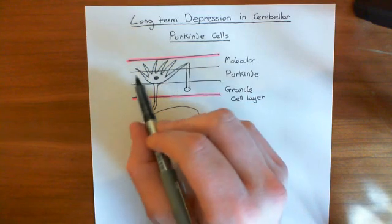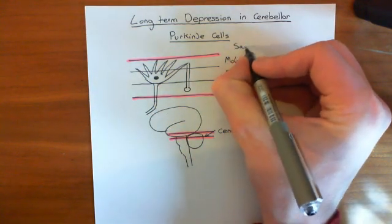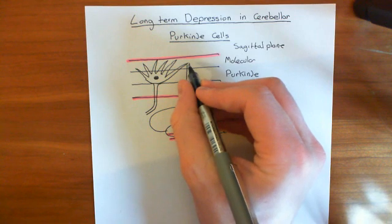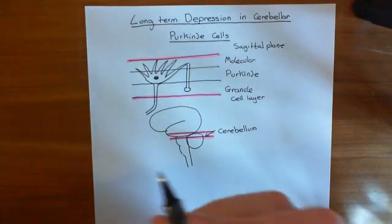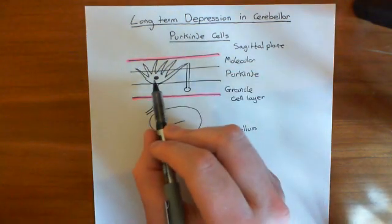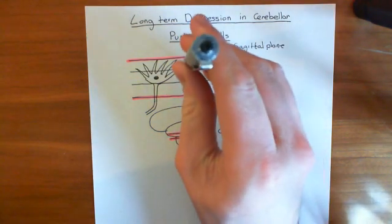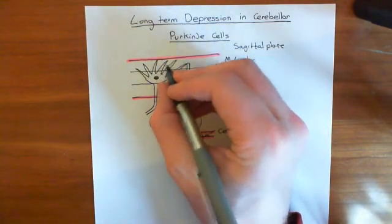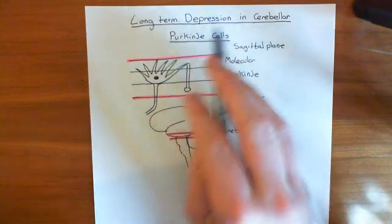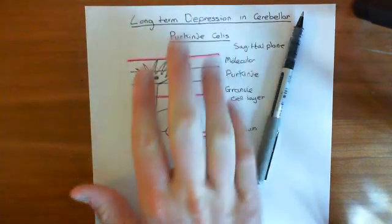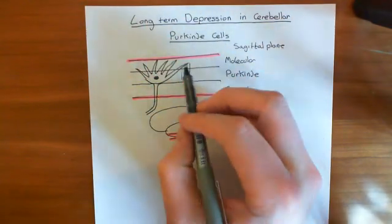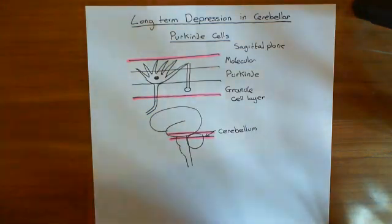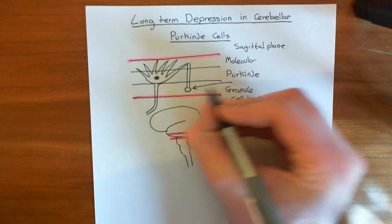The Purkinje cells have their dendritic trees in the sagittal plane, whereas the granule cells send up their axon into the molecular layer, and their axon then moves transverse or orthogonally to the plane in which the dendritic trees of the Purkinje cells sit - going straight out of the page. Basically what it does is it synapses with absolutely loads of Purkinje cells. As the axon of this granule cell moves along, it will be synapsing with loads of the dendritic trees of all these different Purkinje cells.